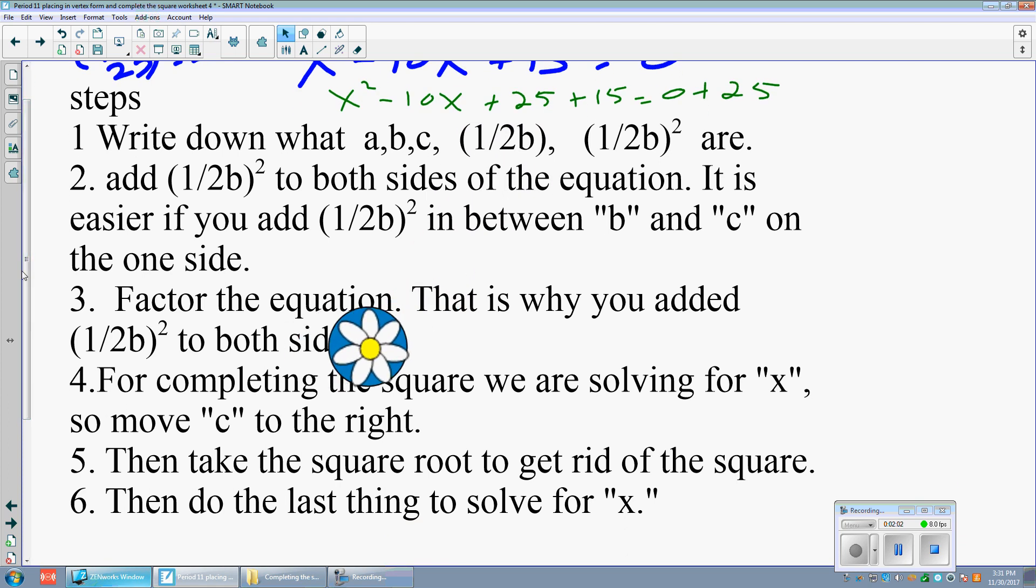Step number three, factor the equation. That's why you added half of b squared to both sides, so we can factor it. That part factors to be x minus 5 quantity squared plus 15 equals 25. Okay, so far, it's the same thing as the vertex form. So what's the big deal?